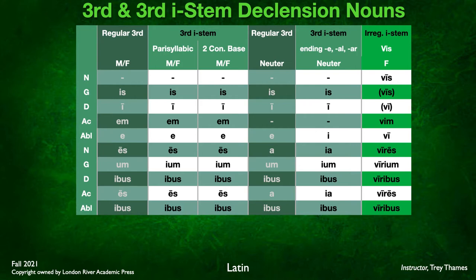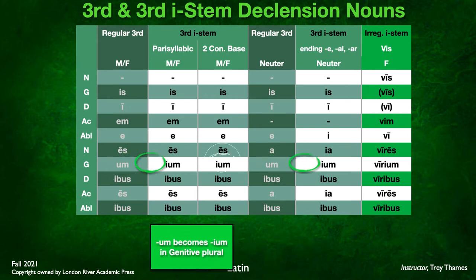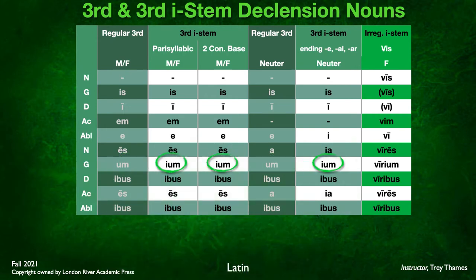Those are the regular third declension masculine and feminine endings. For the third declension I-stem masculine and feminine, the only difference is that UM becomes IUM in the genitive plural. You simply add an I, making it IUM instead of UM. That is the only difference between regular third declension and I-stem for masculine and feminine.